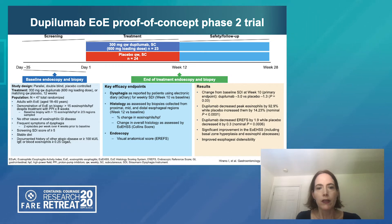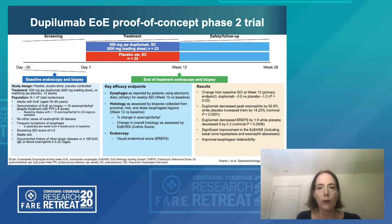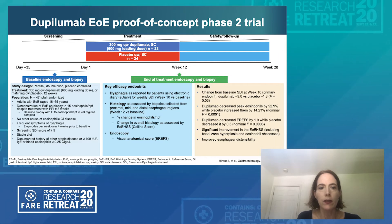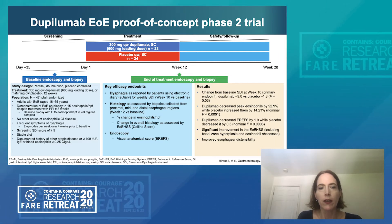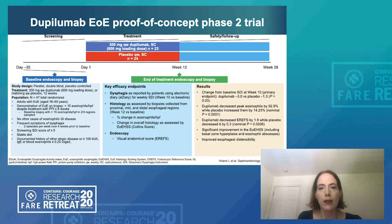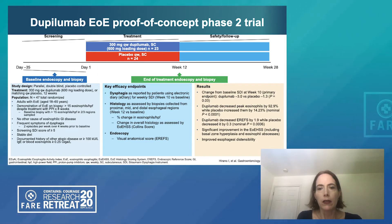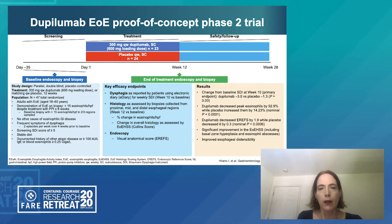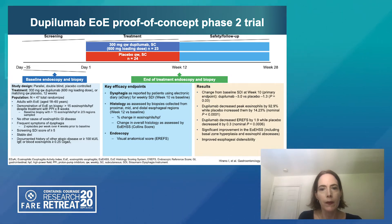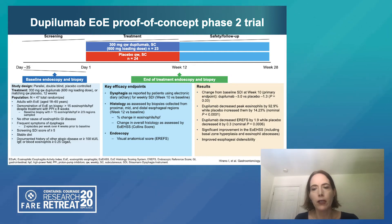Esophageal intraepithelial eosinophil counts relative to baseline were decreased at week 12 in all patients. Relative to placebo, the mean reduction from baseline to week 12 in peak esophageal intraepithelial eosinophil count was 86.8 eosinophils per high-power field — a reduction of 92.9% in patients receiving dupilumab. The count actually increased by 14.2% in those patients receiving placebo.